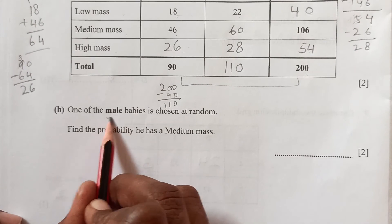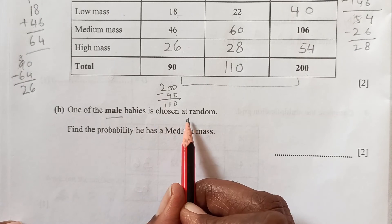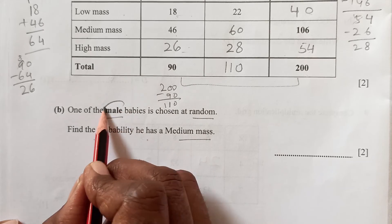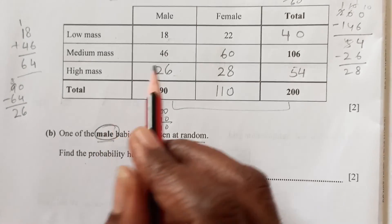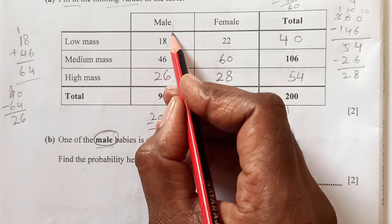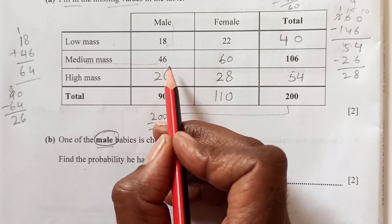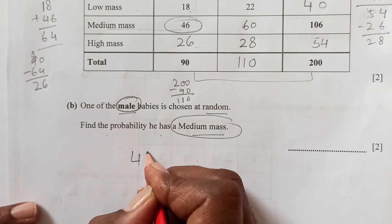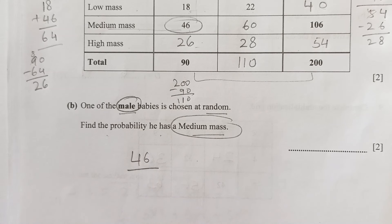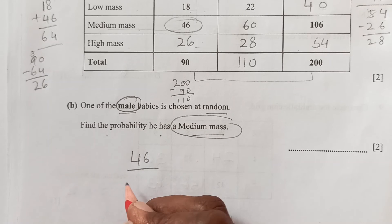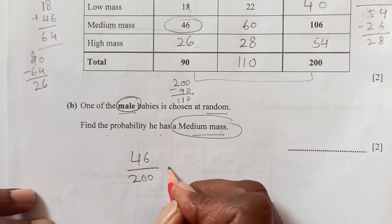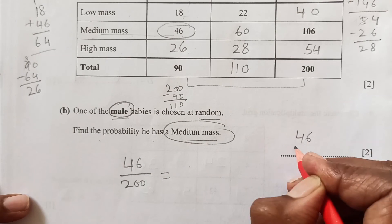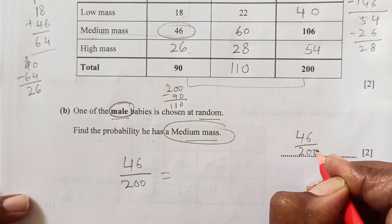Now, one of the male babies is chosen at random. Find the probability that he has medium mass. We are looking for male and medium mass. The value in that cell is 46, out of the total of 200. So the probability is 46 over 200.